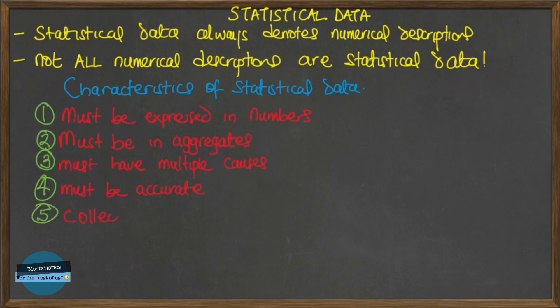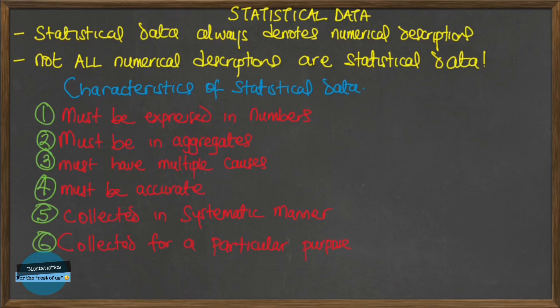The fifth characteristic is that statistics should be collected in a systematic manner. A suitable plan should be prepared for data collection. If data is collected haphazardly, the conclusions may be wrong or misleading. So for numerical descriptions to be called statistical data usable for decision making, the data must have been collected systematically. The sixth characteristic is that data must have been collected for a predetermined purpose. The objective of any inquiry should be clearly stated before collecting the data, as data collected without a predetermined purpose may not be useful in any statistical inquiry.